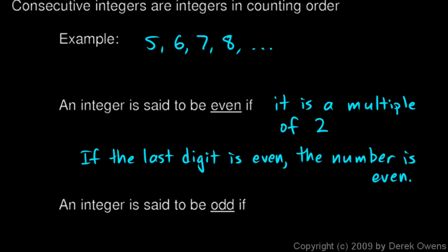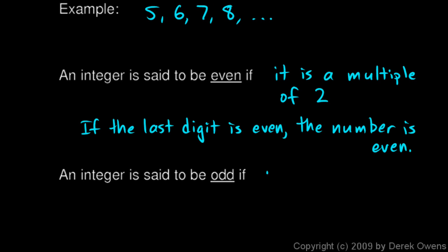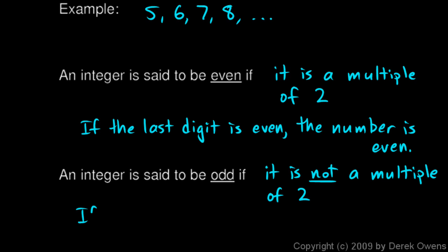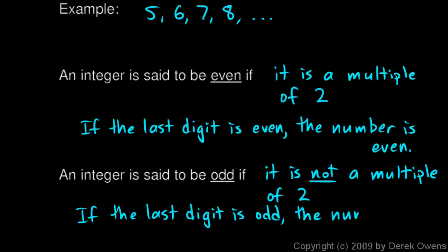An integer is said to be odd if it is not a multiple of 2. We look at the last digit — if the last digit of a number is odd, then the number is odd. So, the number 4,853 has a last digit of 3, and that's an odd number, so the number is odd. You probably already knew that, but we just put all this in for the sake of being complete.